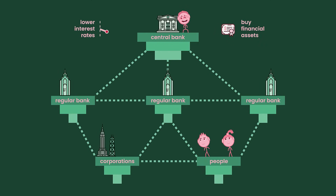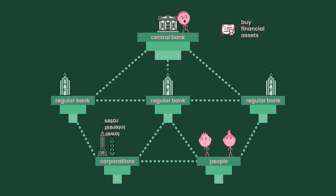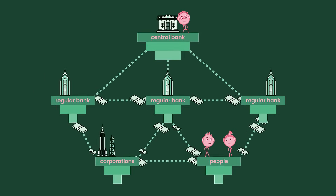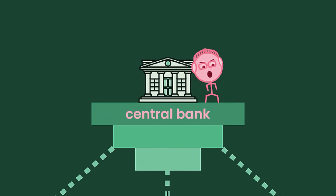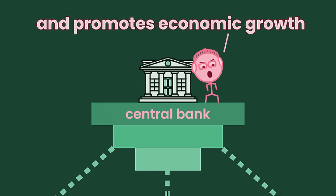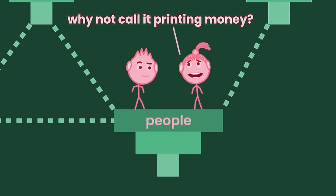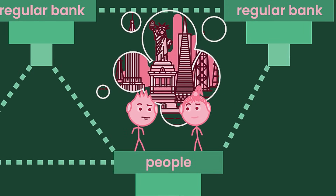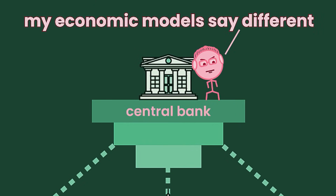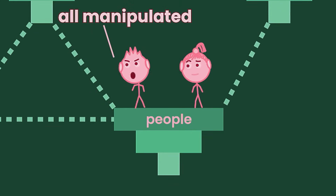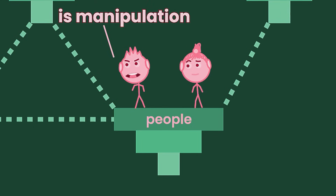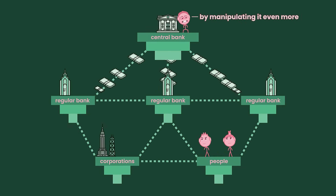I have already lowered interest rates as much as possible, so that solution isn't working as well as planned. The only option we have now is to buy assets. When the central bank buys these assets, regular banks will have more money. In return, these banks will be willing to loan out money to their customers at cheaper rates. We hope this money printing increases the flow of money in the system and promotes economic growth. Why not call it printing money? Because printing money is the last option empires revert to before collapsing, and the central bank doesn't want to admit this is their only option. All manipulated financial systems end up failing — injecting loads of money into a system for the sole reason of growth is manipulation.